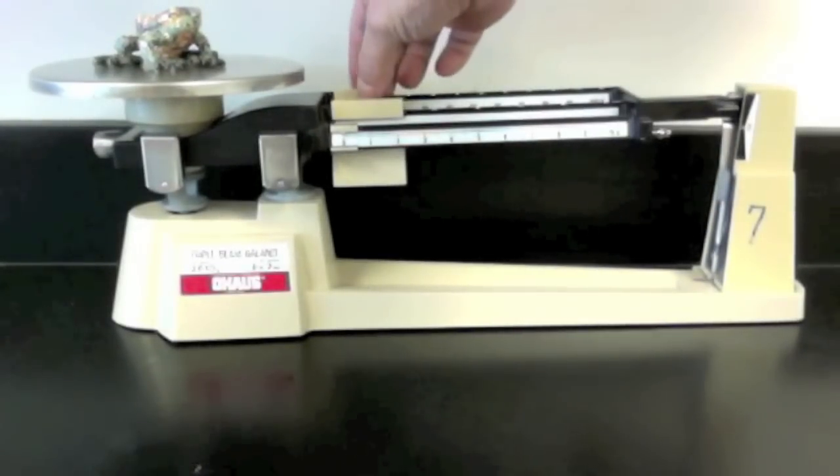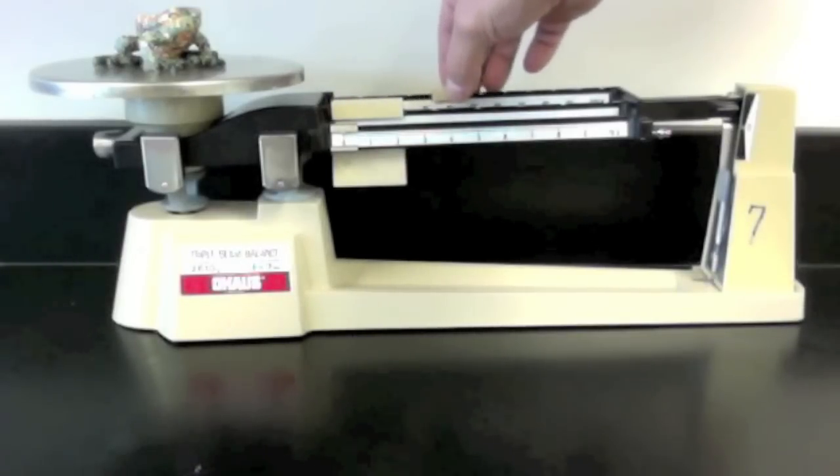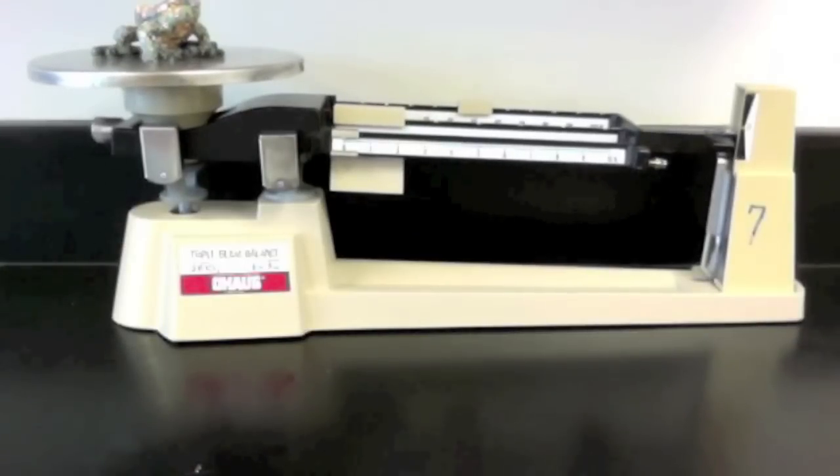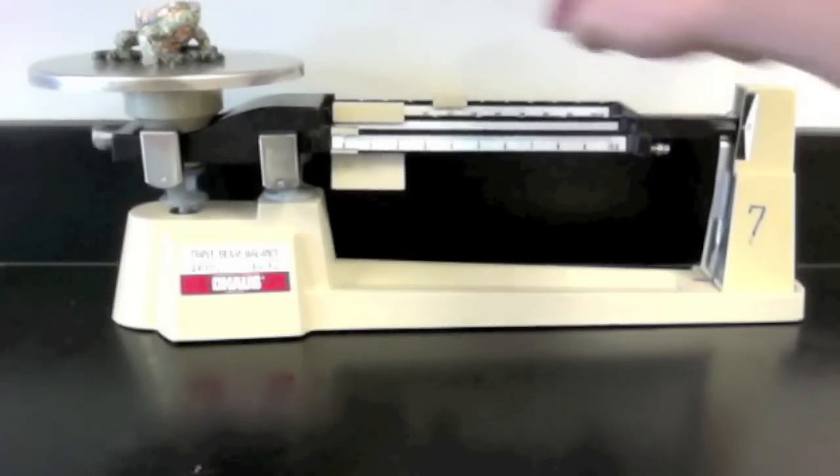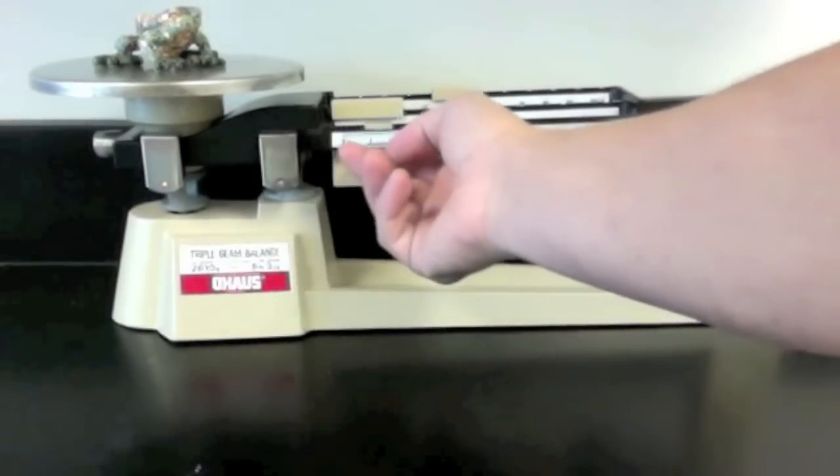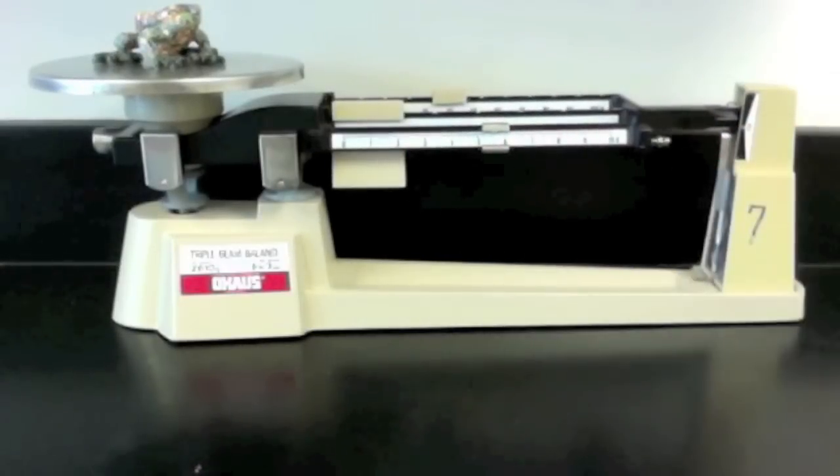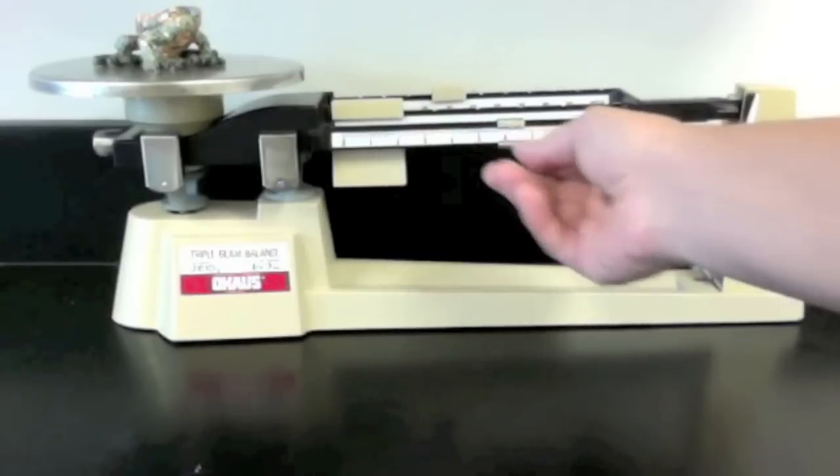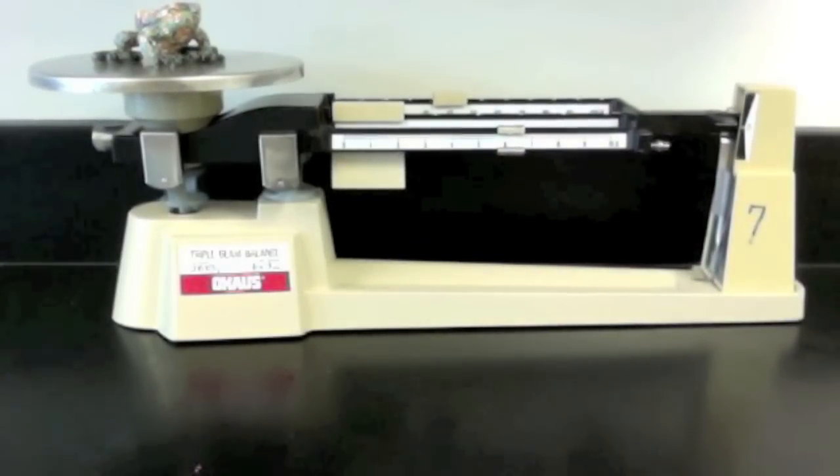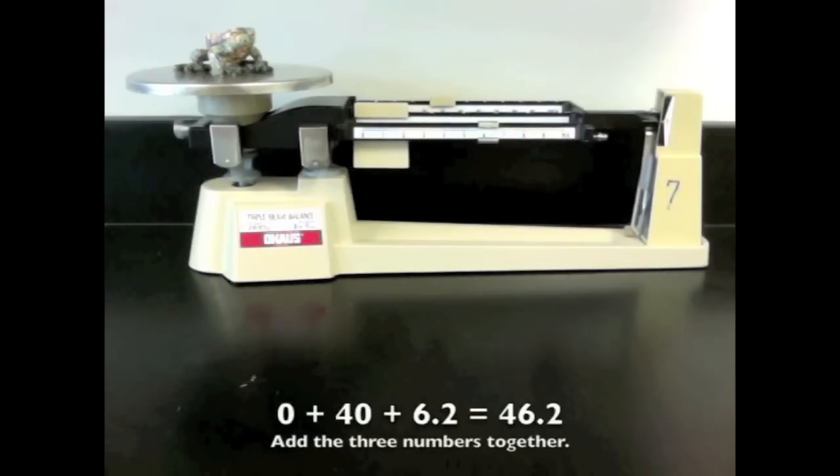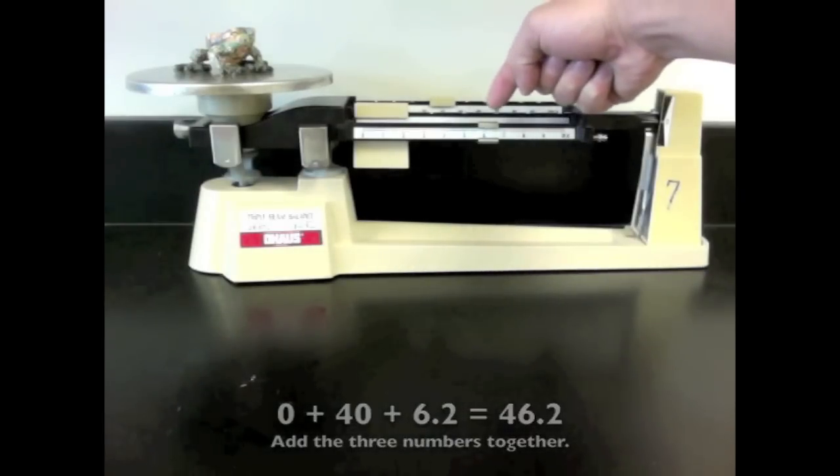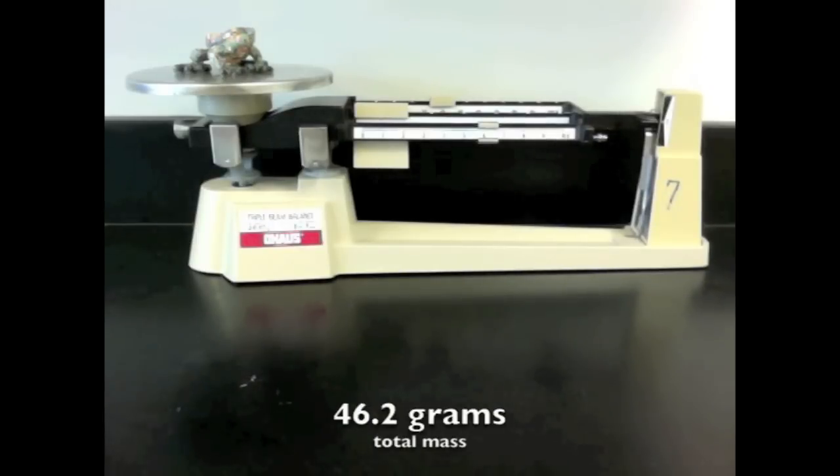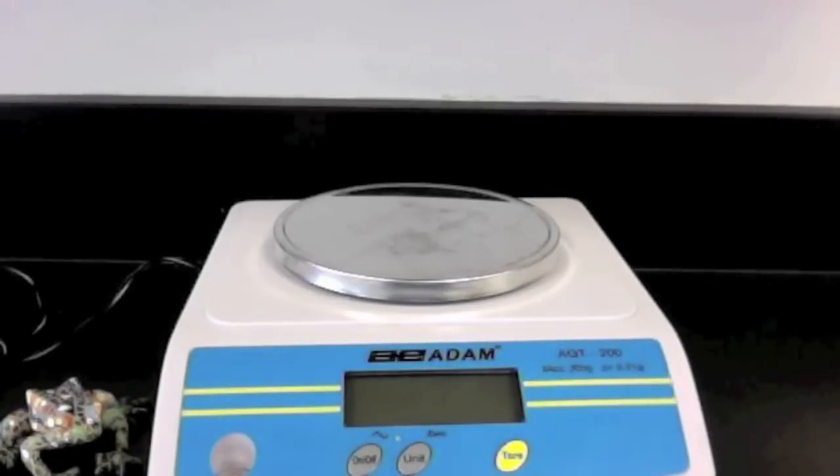Then we use the tens weight and move it out until the needle falls. This tells us our object has a mass that is less than 50. So we move it back to the 40, making sure it settles in the mark. Then we use the ones counterweight. We move it out until the scale balances at zero. To know the mass of our object, we then need to add the numbers on all three counterweights. Zero plus 40 plus 6.2. Our total mass is 46.2 grams. Using an electronic balance scale can be faster and easier.